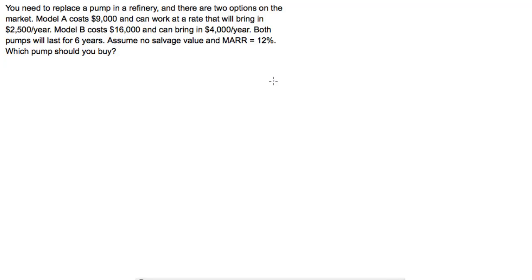We're looking at mutually exclusive projects and comparing them. Mutually exclusive projects are ones where you can only pick one or the other — you can have more than two options. For example, in this problem we want to replace a pump in a refinery, and we can either buy pump A or pump B. You can't install both, so we calculate the net present value of either alternative to decide. We can also use payback period, but it doesn't give as strong an argument.